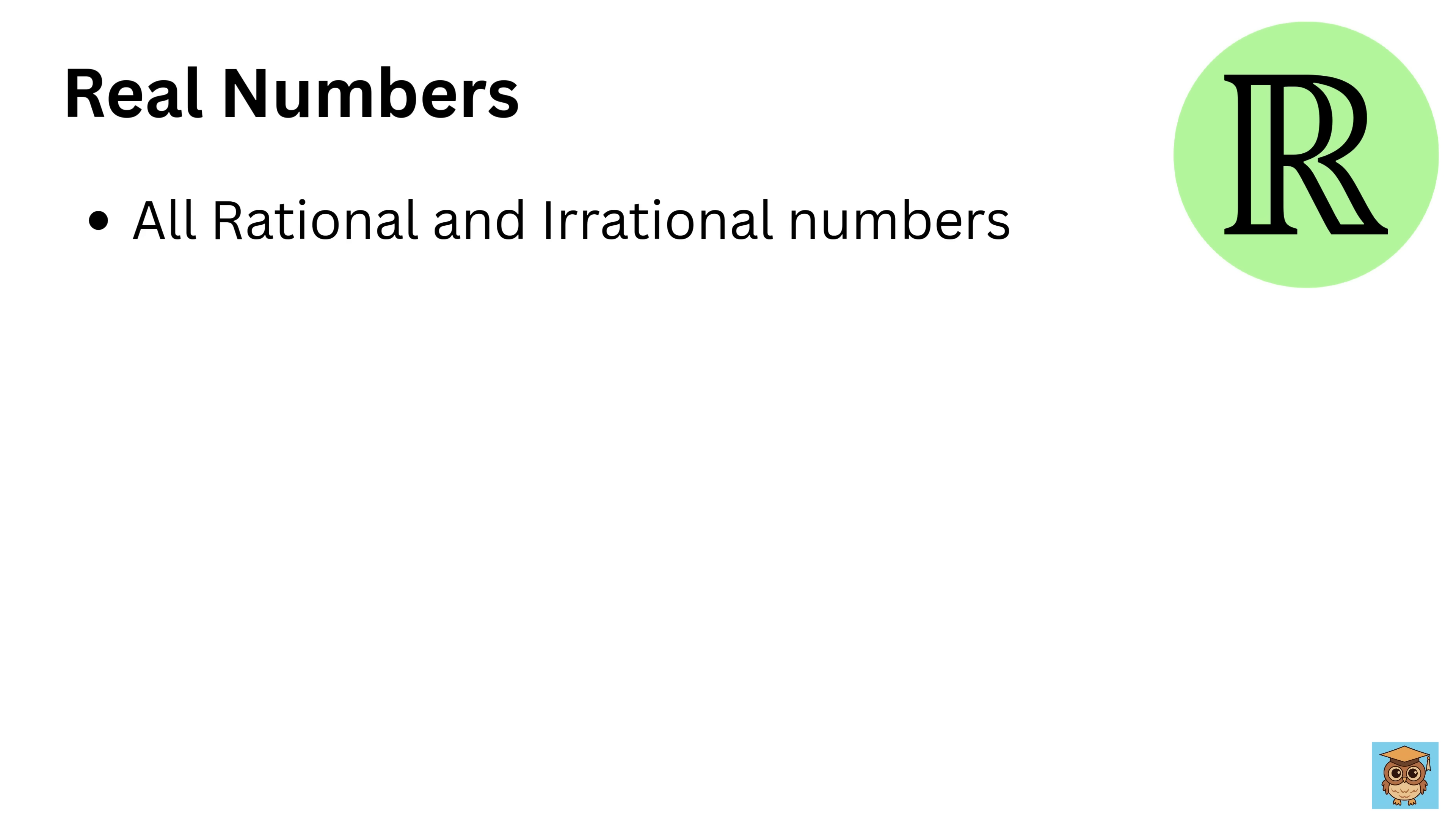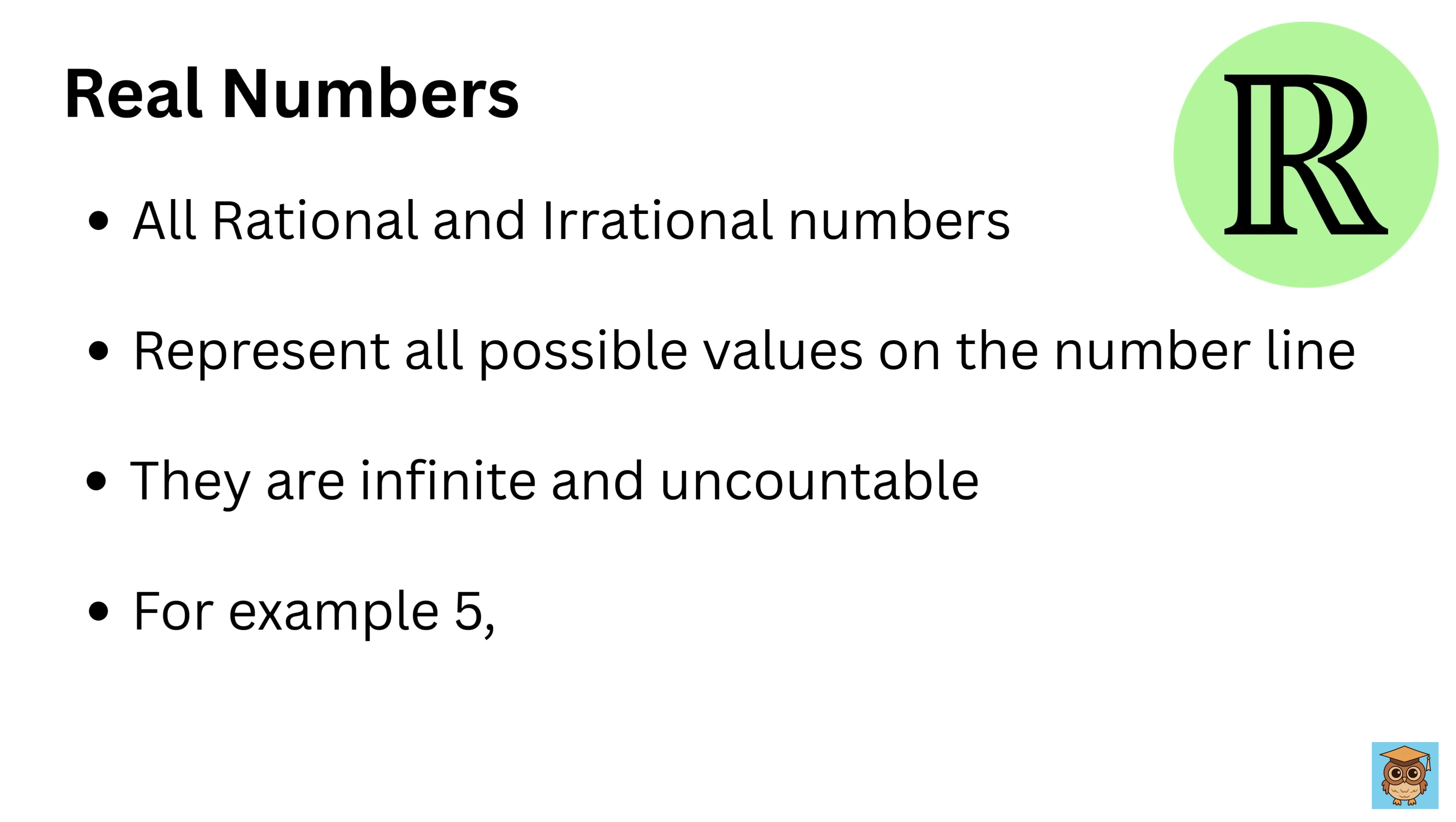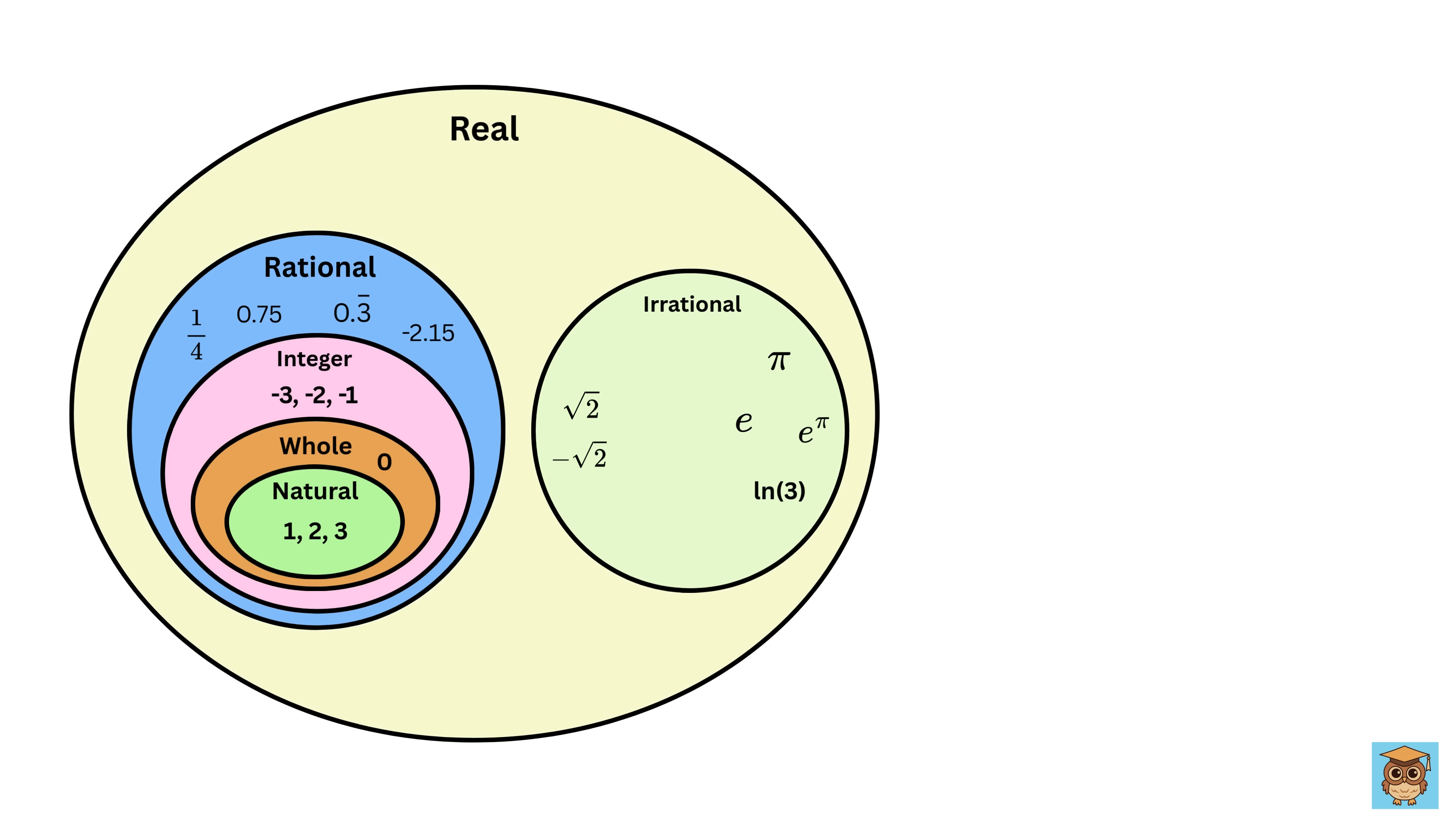Real numbers include all rational and irrational numbers. They represent all possible values on the number line. This set is infinite and uncountable. For example, 5, one-third, square root of 2, pi, -7.68. Real numbers are used in measurements, calculations, and in physical sciences.